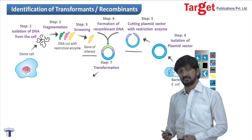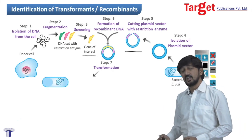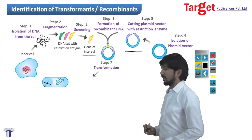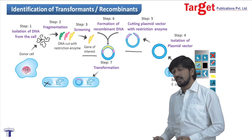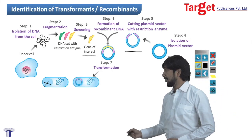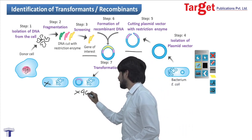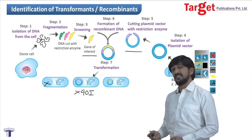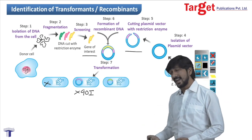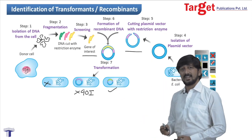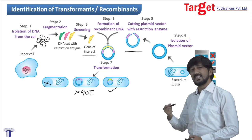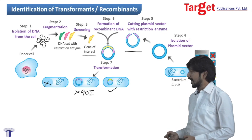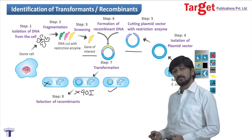After transformation, there would be three types of cells present in the bacterial culture. The first type is a cell which does not contain any kind of plasmid. The second type is a cell which contains a plasmid but no gene of interest. The third type is a cell which contains a plasmid as well as our gene of interest. The question is how to differentiate between these cells and identify a recombinant cell.